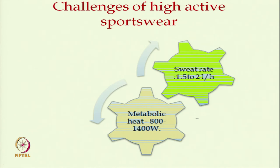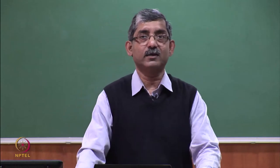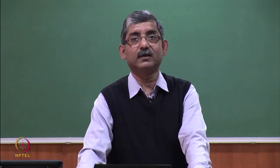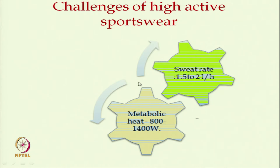Now, basic challenges in sportswear: there are two main challenges for active sportswear. The sportswear has to manage a high rate of sweating — it should absorb and transmit sweat at a rate of typically 1.5 to 2 liters per hour. The mass of clothing should not increase significantly. Also, metabolic heat generation is very high during high activity, typically ranging from 800 to 1400 watts, and this heat should be transmitted through the sportswear.